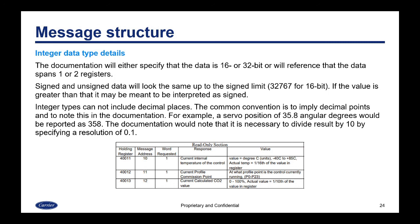The documentation will either specify that the data is 16 or 32-bit, or will reference that the data spans one or two registers. Signed and unsigned data will look the same up to the signed limit of 32,767 for 16-bit. If the value is greater than that, it may be meant to be interpreted as signed or as a 32-bit number. Integer types cannot include decimal places — this is very important with Modbus. The common convention is to imply decimal points and note this in the documentation. For example, a servo position of 35.8 angular degrees would be reported via Modbus as 358. The documentation would note that it is necessary to divide the result by 10, or by specifying a resolution of 0.1.